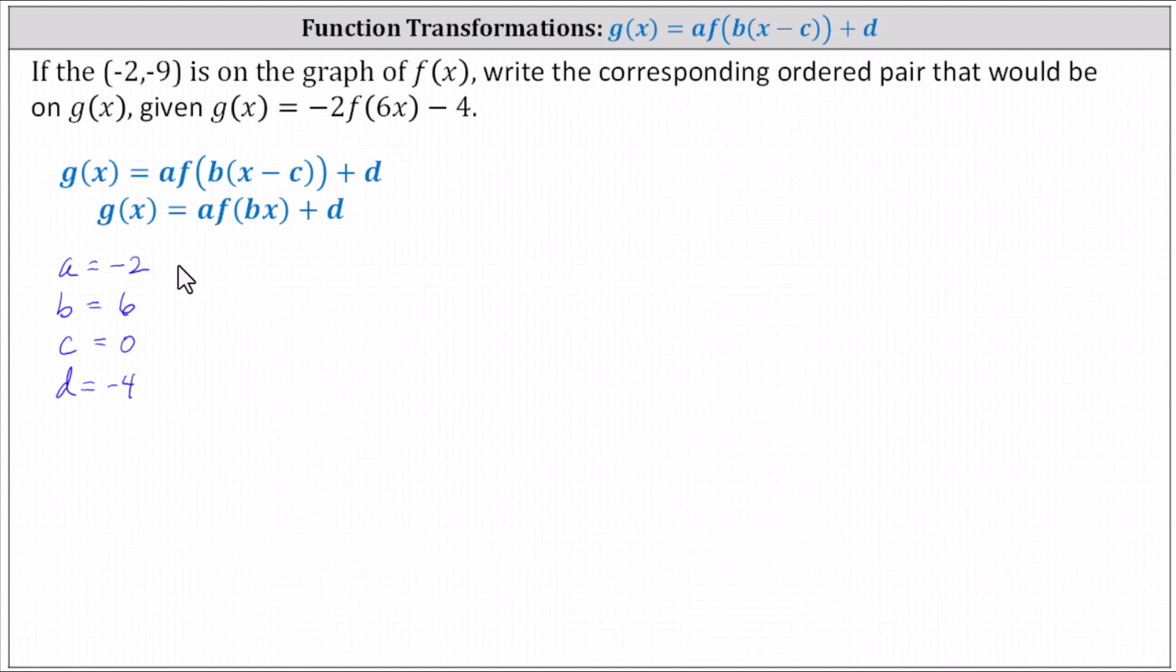Recall a equals negative two indicates a vertical reflection as well as a vertical stretch by a factor of two. B equals six indicates a horizontal compression by a factor of one-sixth. C equals zero indicates no shift left or right, and d equals negative four indicates a shift down four units.